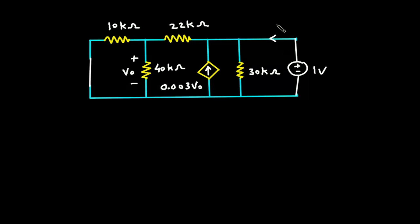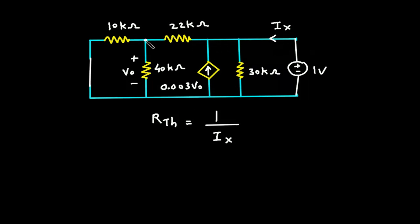Let's say this is current Ix. Therefore RTH will be equal to 1V divided by Ix. Now we have to find this Ix to get the value of RTH. Let's say this is node VO, and VA is equal to 1V. Let's say this is the reference node.